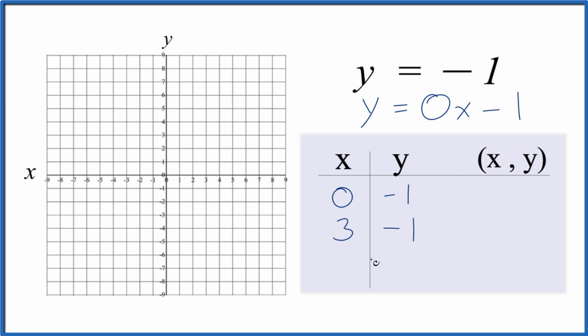And these are just numbers I'm making up. How about negative 6? Negative 6 times x, that's 0, y is still negative 1. So any value that we would put in for x, y is always going to be negative 1.